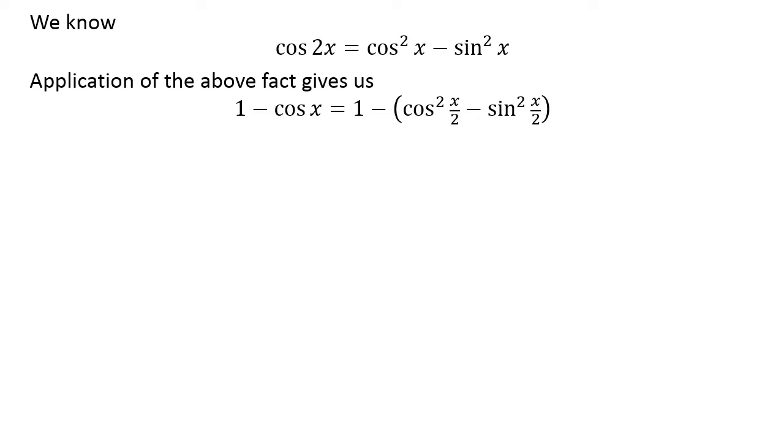So application of the above fact gives us 1 minus cosine of x is equal to 1 minus square of cosine of half of x minus square of sine of half of x.